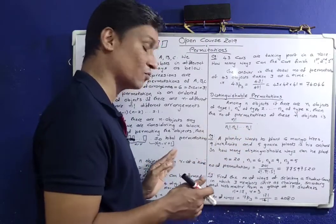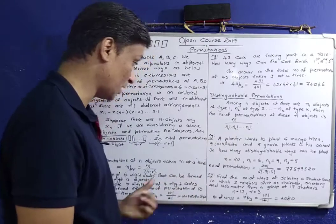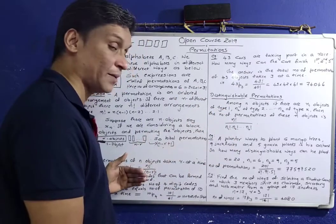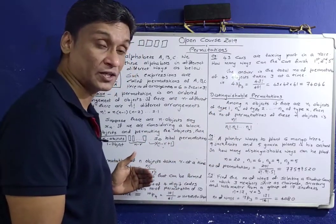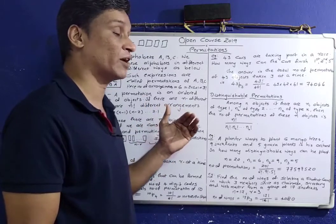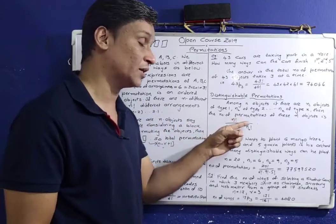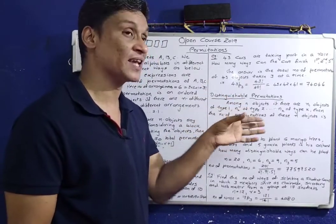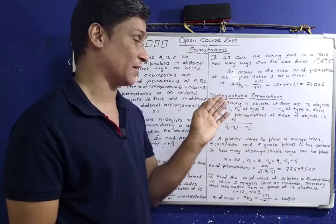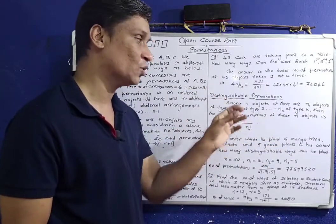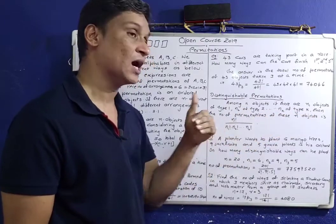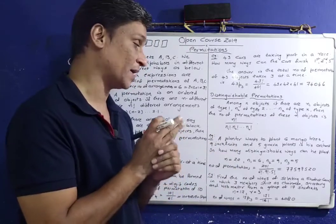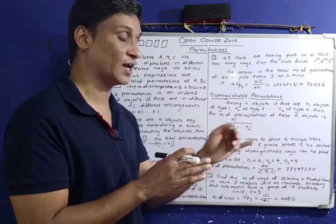This formula is to be memorised. So the formulas are: n factorial for all n objects; nPr equals n factorial divided by n minus r factorial for n objects taken r at a time; and n factorial divided by n1 factorial into n2 factorial into ... into nk factorial for distinguishable permutations.